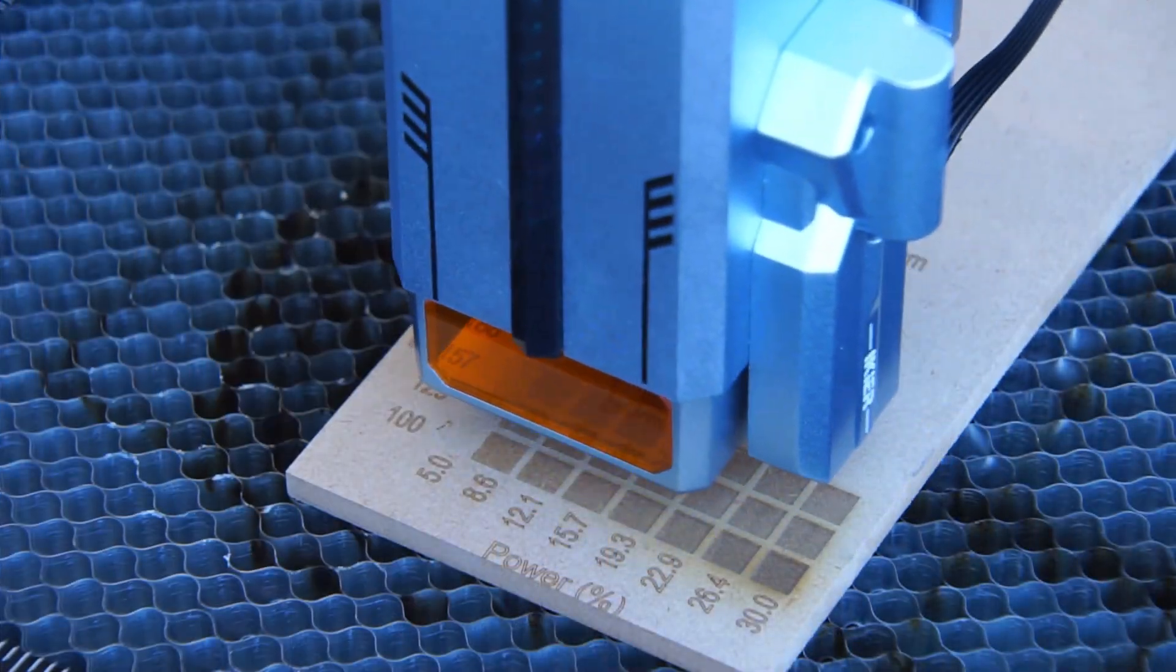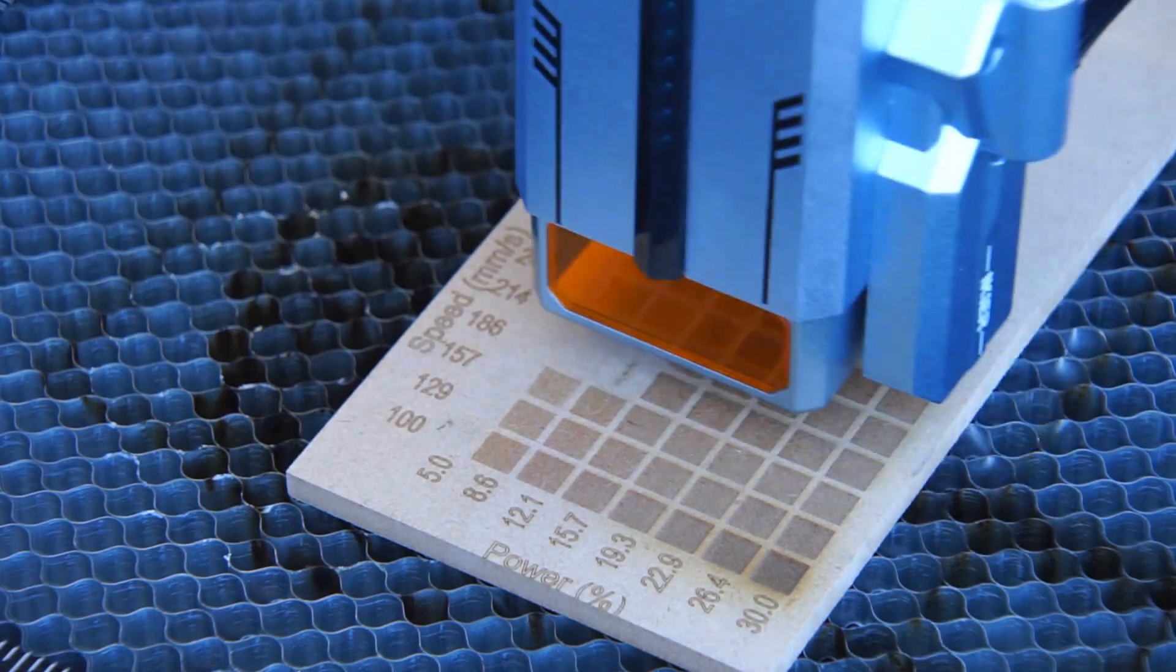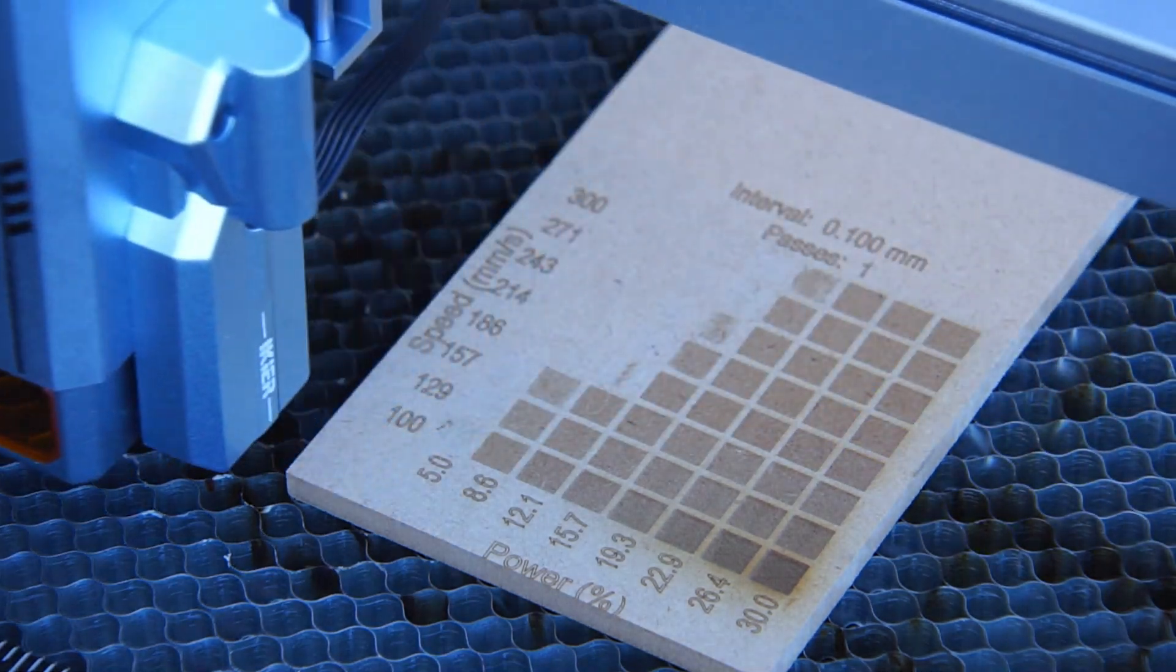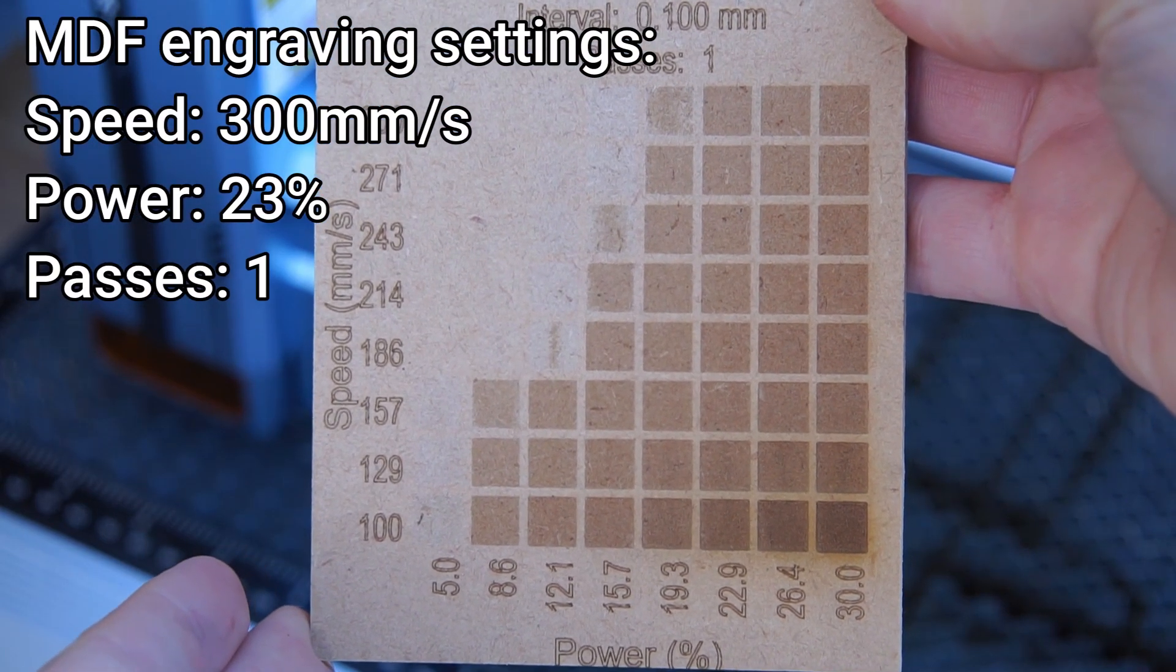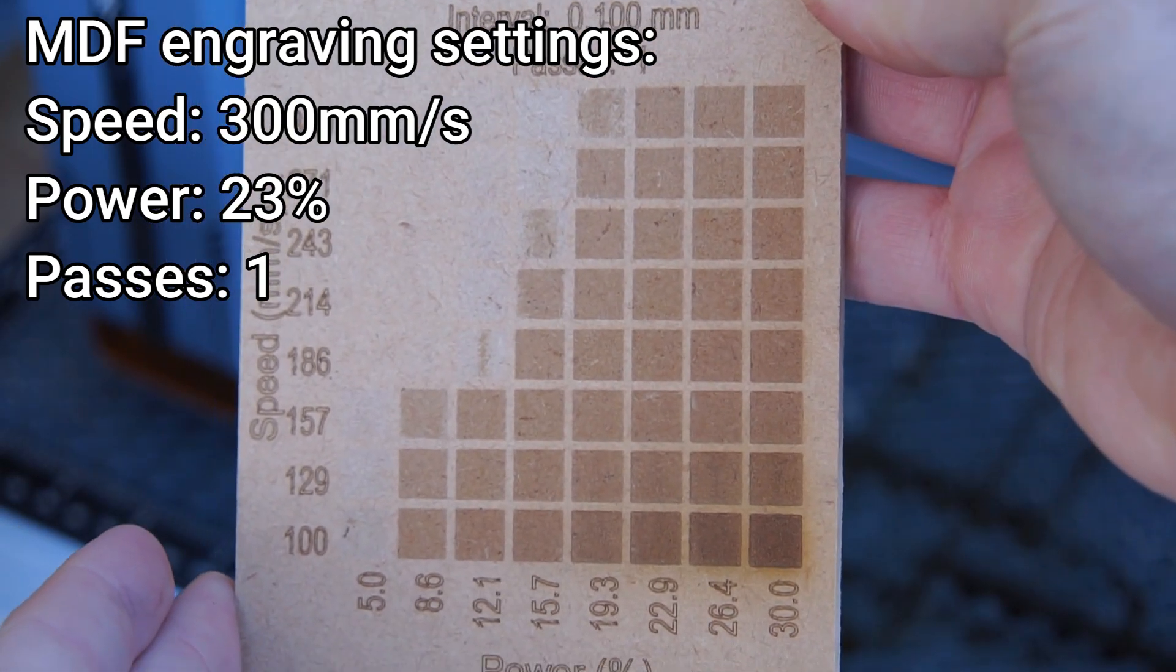Next I performed an engraving test on MDF. Based on these results you can run the machine at full speed while using about 23% power.